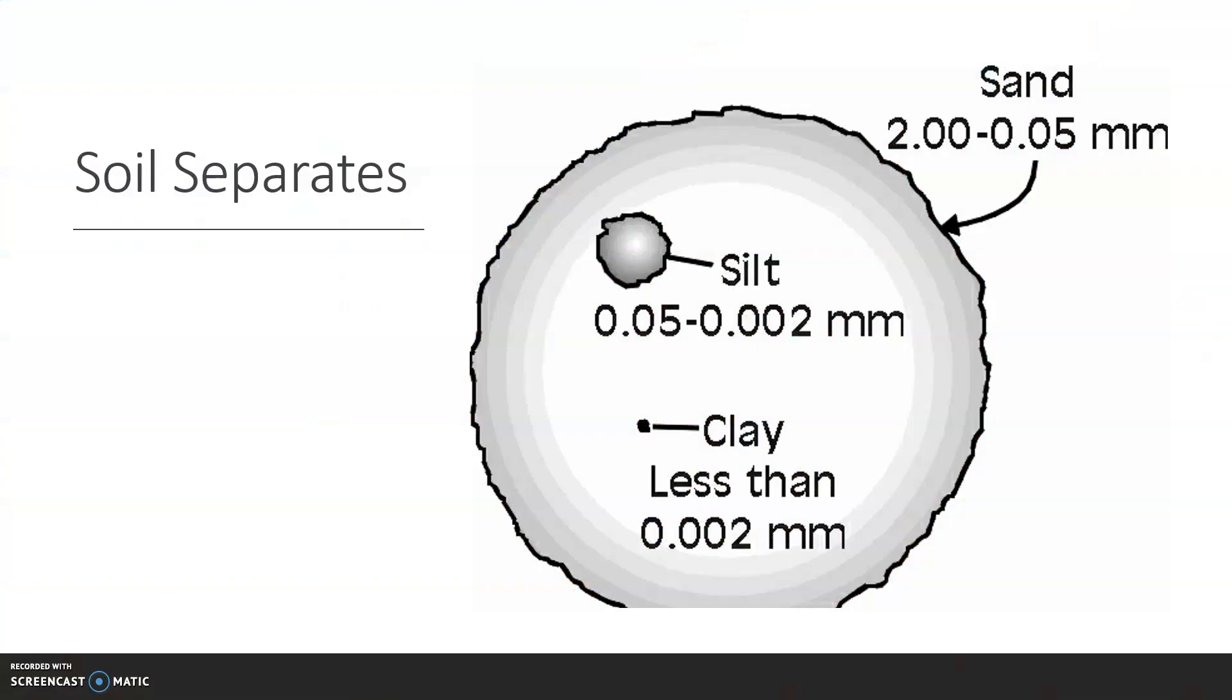There are three different sizes of soil particles. These are referred to as the three soil separates. The largest soil separate is sand. Sand has a diameter of 2.00 millimeters to 0.05 millimeters.